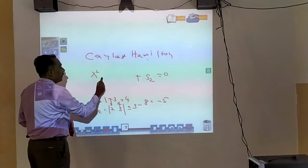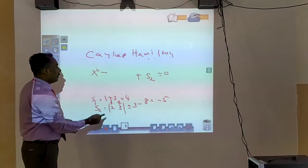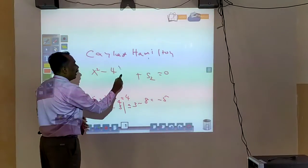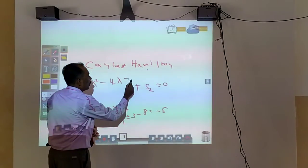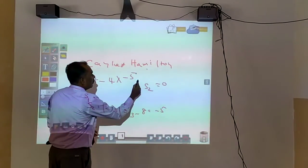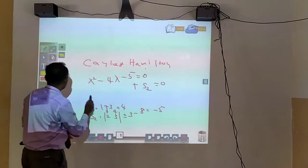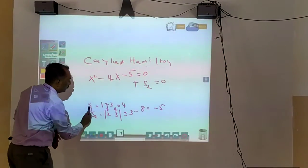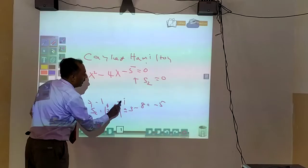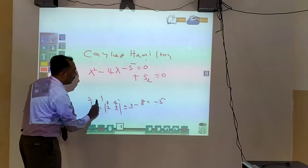Lambda square minus S1 value is 4, so 4 lambda plus S2, which is minus 5, equals 0. This is the characteristic equation for the matrix.